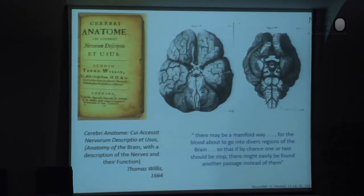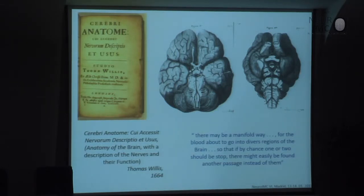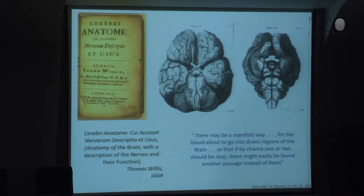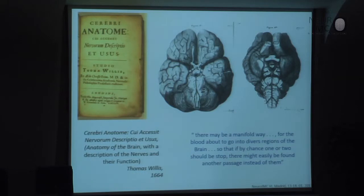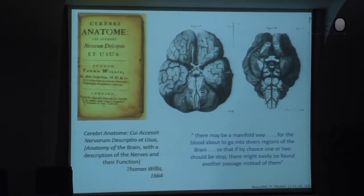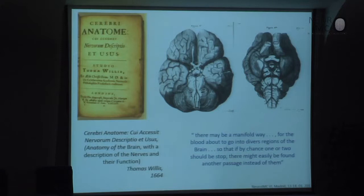This is his great scientific work named Anatomy of the Brain with a description of the nerves and their function. In this book, published in 1664, he described the circle on the base of the brain that would later be named the Circle of Willis. His description states: 'There may be a manifold way for the blood to go into diverse regions of the brain, so that if by chance one or two should stop, there might easily be found another passage instead.' So here we find not only a description of the anatomical structures, but also a very good proposition for the physiological function of the Circle of Willis.